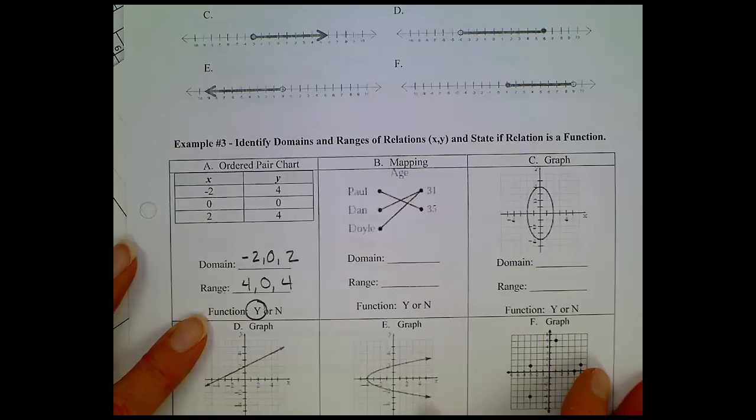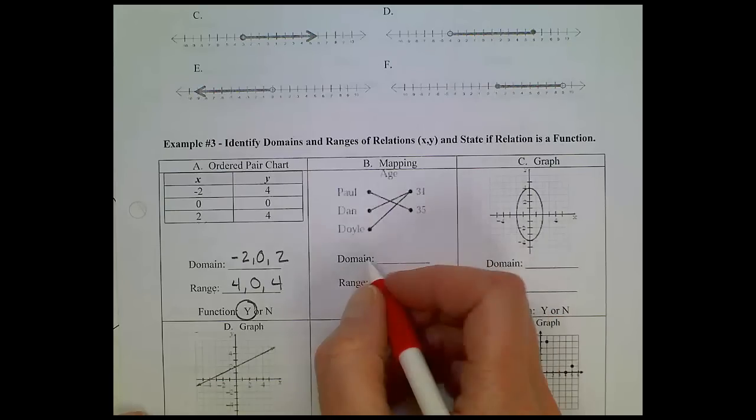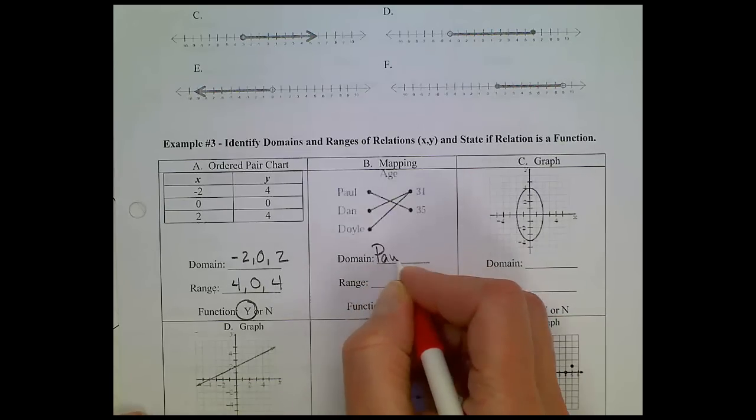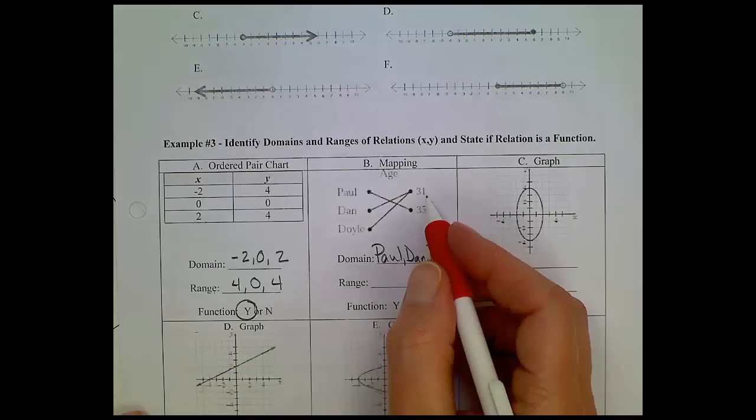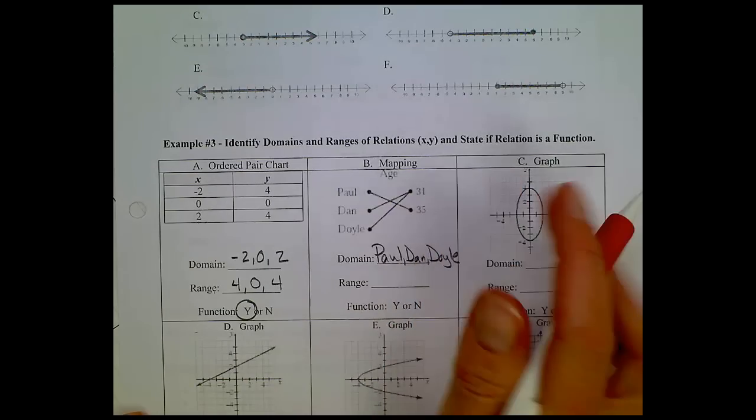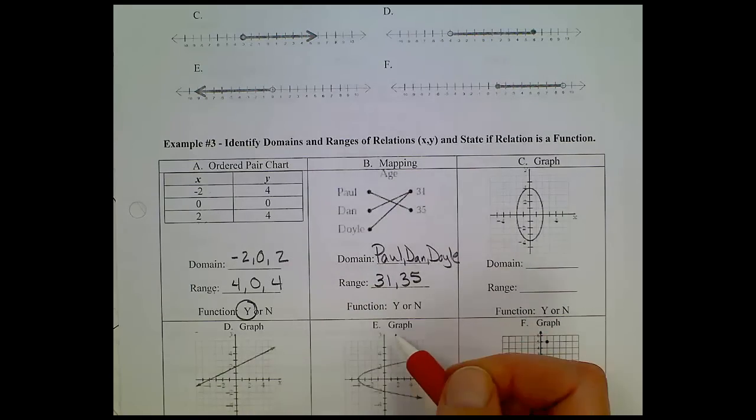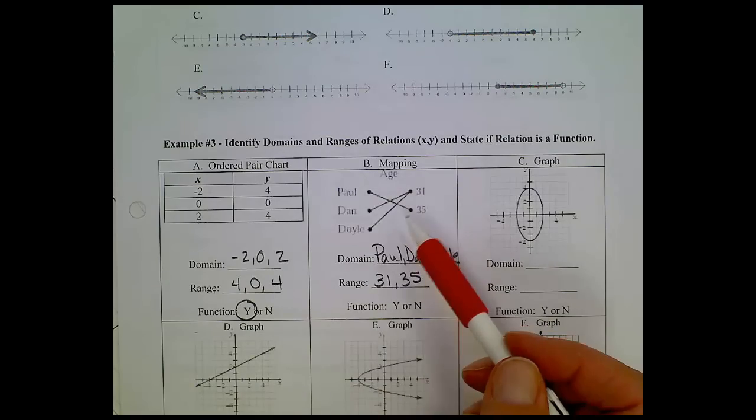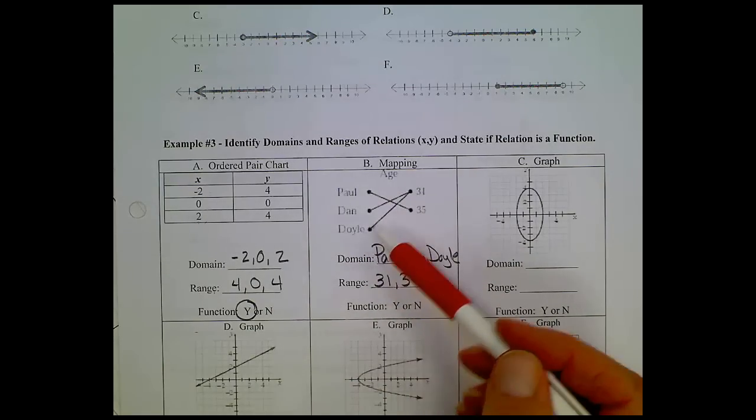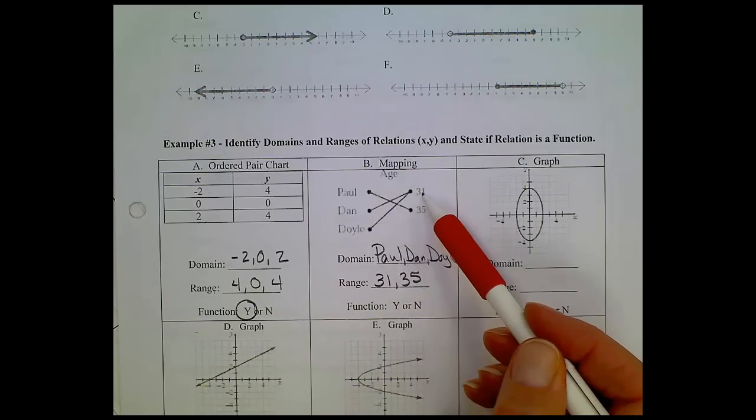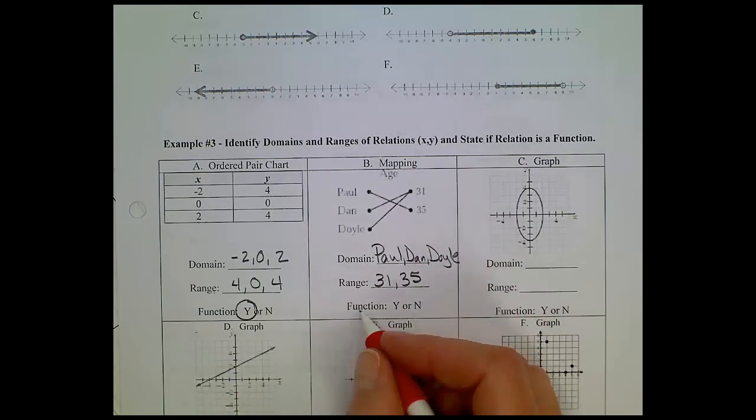Now, letter B, looking at the mapping. Domain, again, are your inputs. Range are your outputs. So, the domain for this function would be Paul, Dan, and Doyle. And the range would be the outputs. It looks like 31 and 35. Now, is this one a function, yes or no? Well, does x repeat? I don't think x is going to repeat. I have Dan and Doyle that both match up with 31, but that makes 31 repeat itself. It doesn't mean that any of your input values repeat themselves. So, this one is also a function.